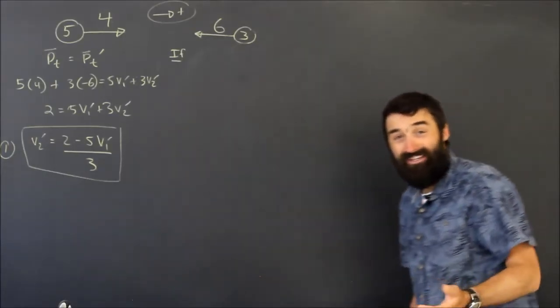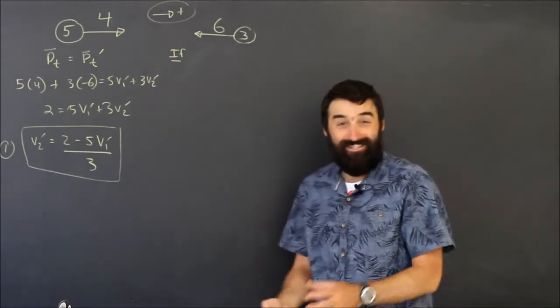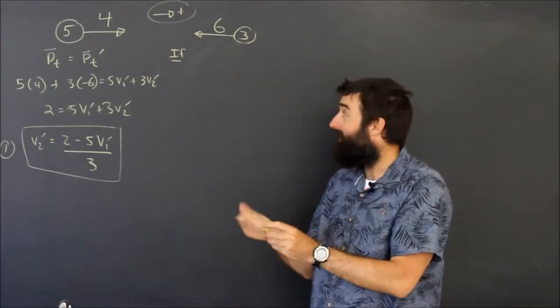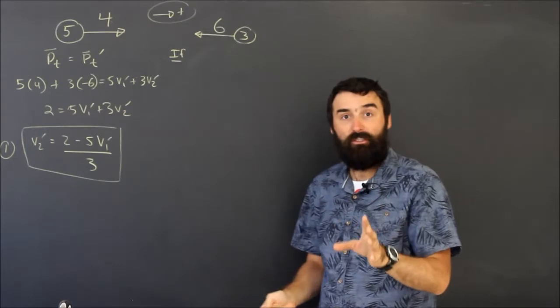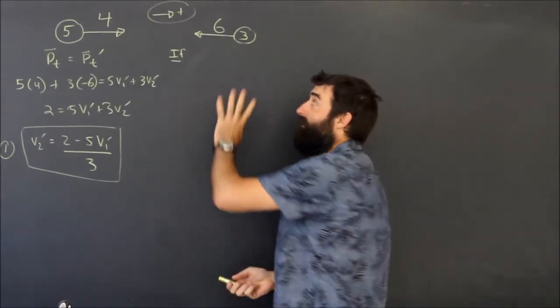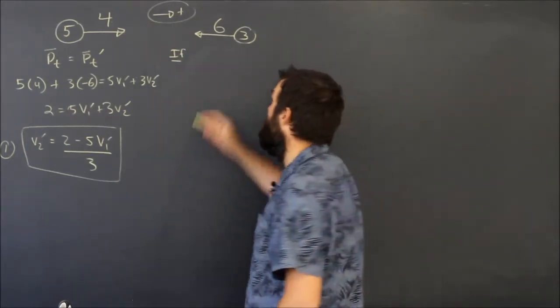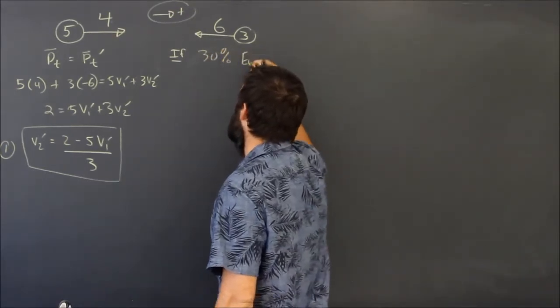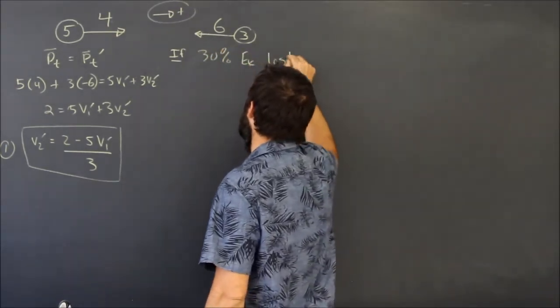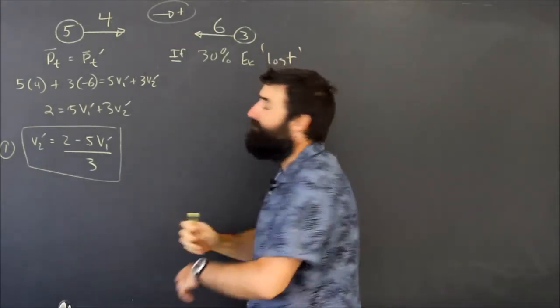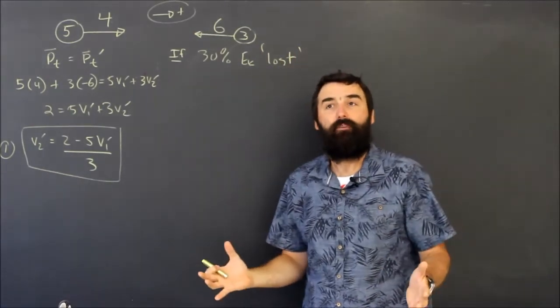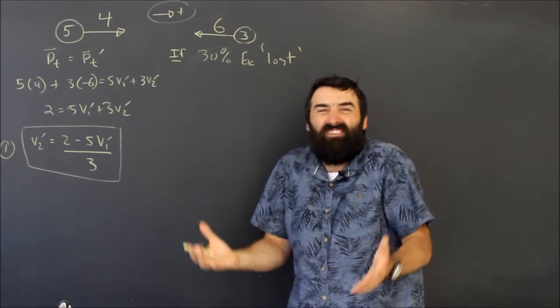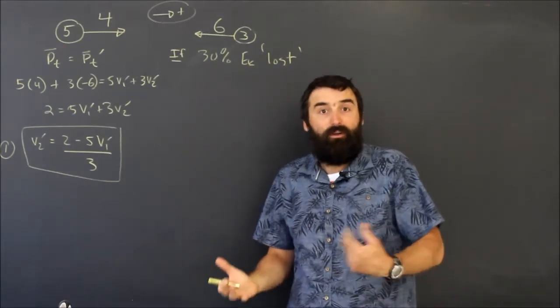Okay, so part B of essentially the same question, the second video in our one-dimensional collision trilogy goes something like this. Now instead of an elastic collision, what if 30% of the kinetic energy that it had was lost? If 30% of the kinetic energy was lost, then obviously you would expect everything to go slower, so that's one little hint.